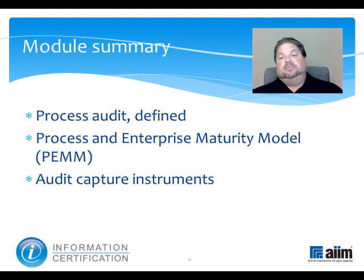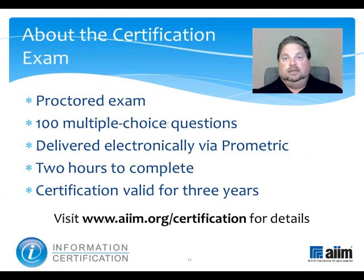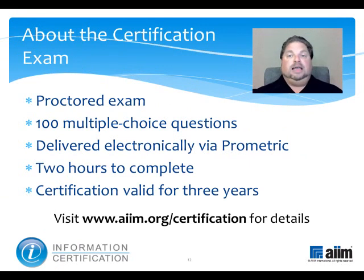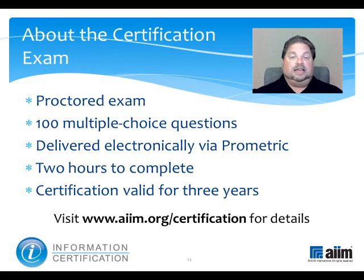Now that you've completed this module, you may next wish to review the one covering how roles and responsibilities play into process routing. The material you have just reviewed is part of a broader program of study that prepares you to take the information certification exam. This proctored test consists of 100 multiple-choice questions and is delivered electronically by Prometric. You'll have two hours to complete it, and upon passing, you'll earn a professional certification that's valid for three years. For more information, please visit www.aim.org/certification.